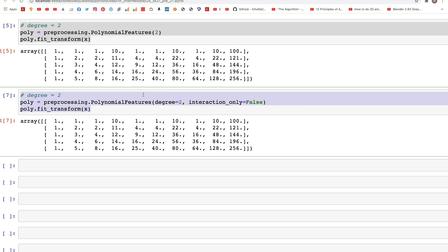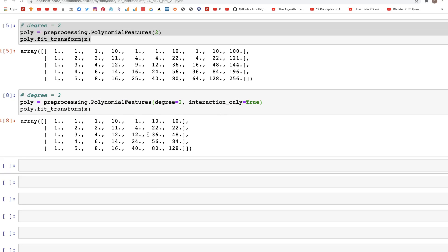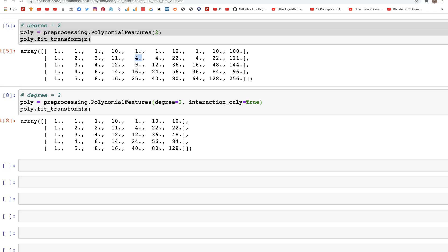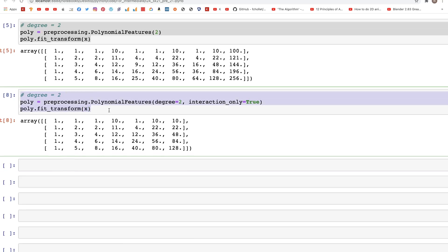Now if we change that, instead of False if we set this to True, then we get only the interaction columns. So the columns for power are not there in the output. For example, this column one, four, nine, sixteen, twenty-five, that's not in the output. So that's the difference there.